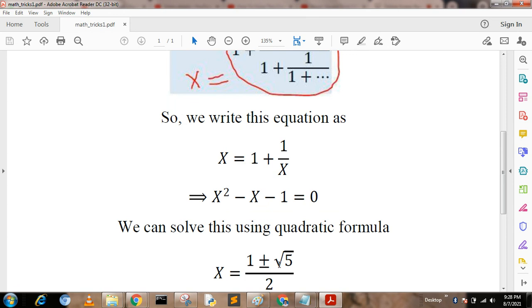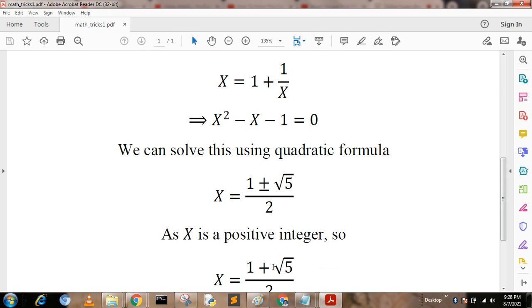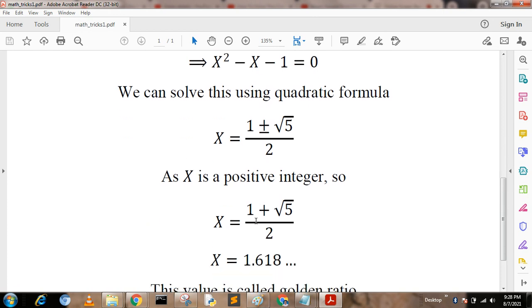Since x is a positive integer, we take the value as x equals one plus root of five by two. After solving this value, we get a fraction point that is x equals 1.618.